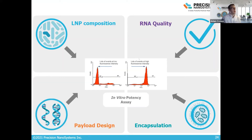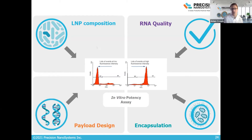The LNP contains a number of different facets that are important for analysis. On the LNP side, you need to consider size, polydispersity, zeta potential, composition of lipids, and amount of lipids. On the RNA quality side, there's encapsulation and payload design — all of which factor into achieving the best potency possible.